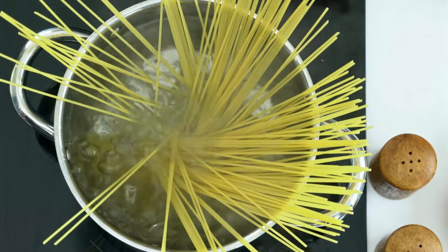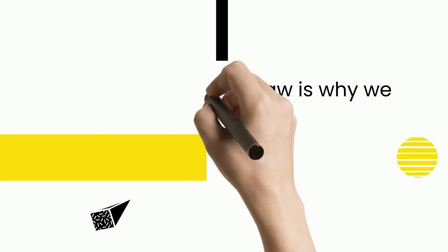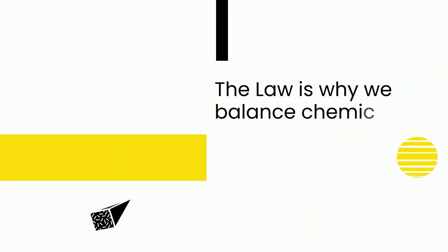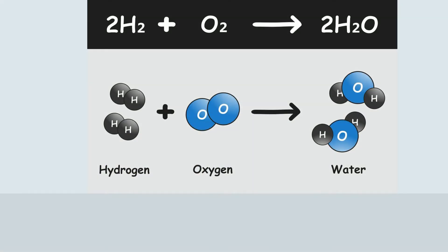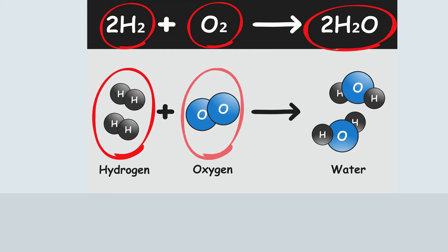This law is why we balance chemical equations. Let's look at water. You have two H2, or two hydrogens, some oxygen, and it yields water, H2O. Notice you have four hydrogens and two oxygens on the left of the equation, which we call the reactants, and it yields the same on the right, which we call the products.